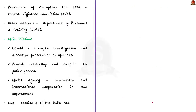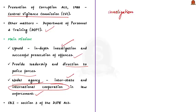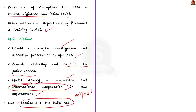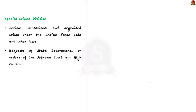CBI derives its legal power to investigate crime from the Delhi Special Police Establishment Act of 1946. Superintendence of CBI related to investigation under the Prevention of Corruption Act of 1988 lies with the Central Vigilance Commission, or with the Department of Personnel and Training in the Ministry of Personnel, Pension and Grievances. The mission of CBI includes upholding the Constitution through in-depth investigation and successful prosecution of offences, and acting as a nodal agency for interstate and international cooperation in law enforcement. CBI has three divisions: the Anti-Corruption Division, Economic Offences Division, and Special Crimes Division.